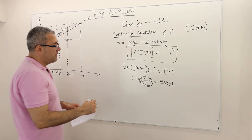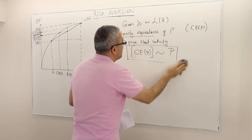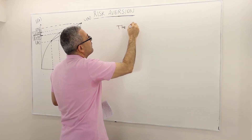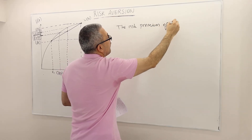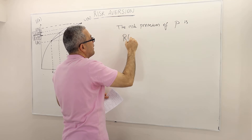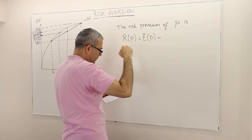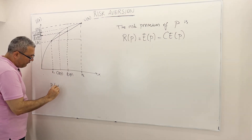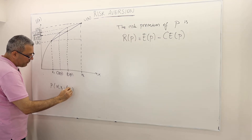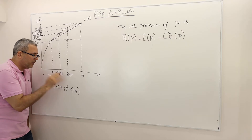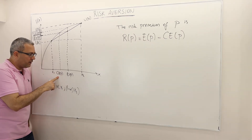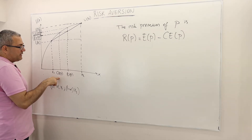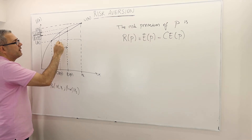The next concept I'll define is the risk premium of a lottery P. The risk premium is denoted by the difference between the expected value of the lottery and the certainty equivalence of the lottery. For a lottery with alpha probability X1 and (1 - alpha) probability X2, the risk premium is E[P] minus CE(P).